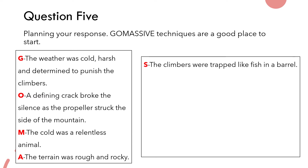Even from just the first few letters of GO MASSIVE, a story is slowly starting to flesh itself out. The main thing to focus on is making sure those techniques are in there, as that's really where the marks are available. For S — Simile: 'The climbers were trapped like fish in a barrel.' However, this isn't the best simile — the examiner might consider it a cliché. A cliché is something used so often it loses all meaning, like 'you're as beautiful as a red rose.' Try to use a simile that's more unique and visually effective.